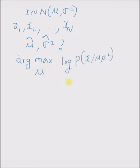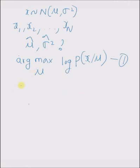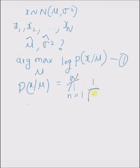The problem can be formally stated as follows: the argument that maximizes the logarithm of the probability of x given mu. This probability of x given mu can be written as the product of n probability distributions, that is the probability distribution of each of the realizations — the product from n equal to 1 to capital N of 1 by square root of 2 pi sigma square. The likelihood function is defined as this product, with the exponential term minus x minus mu whole square by 2 sigma square.